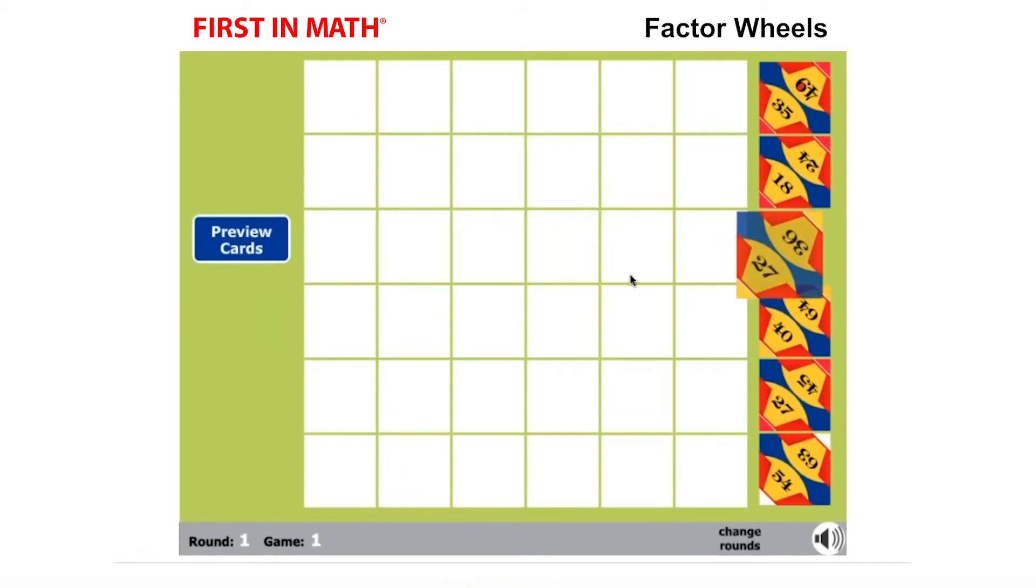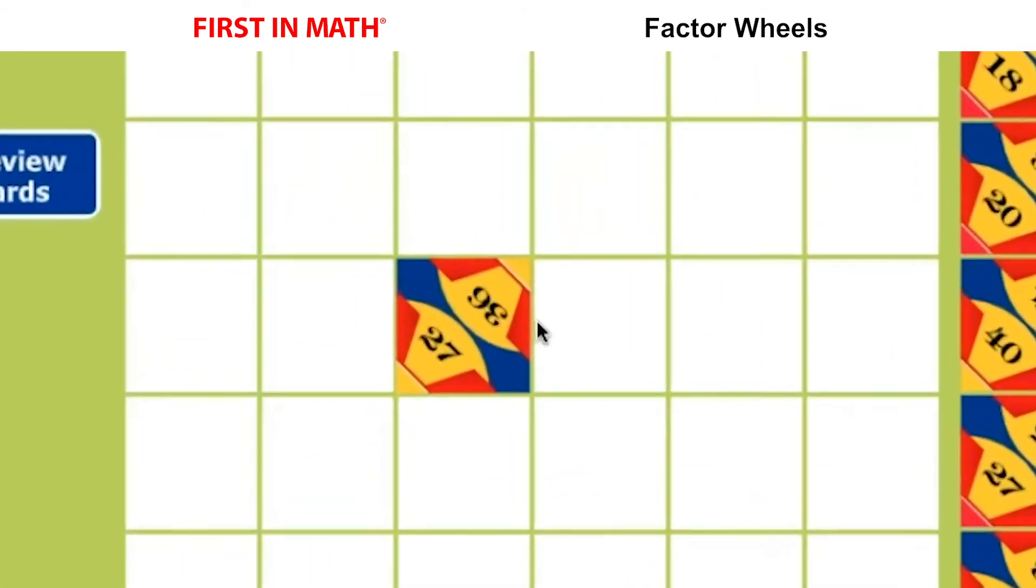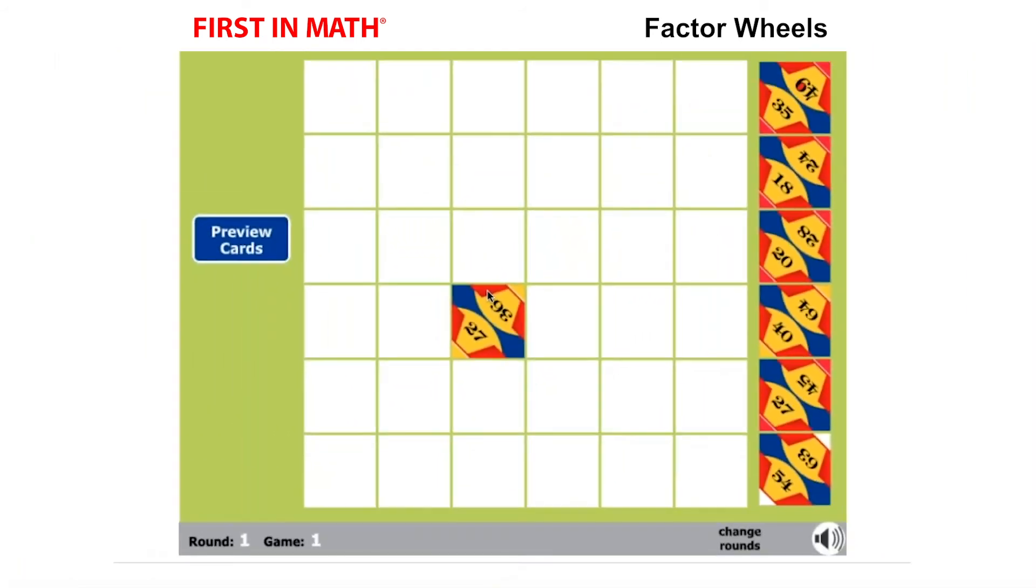Click and drag a card off the sidebar and onto the playing grid to begin. We'll take this card and use the 36 as our first piece of the wheel.